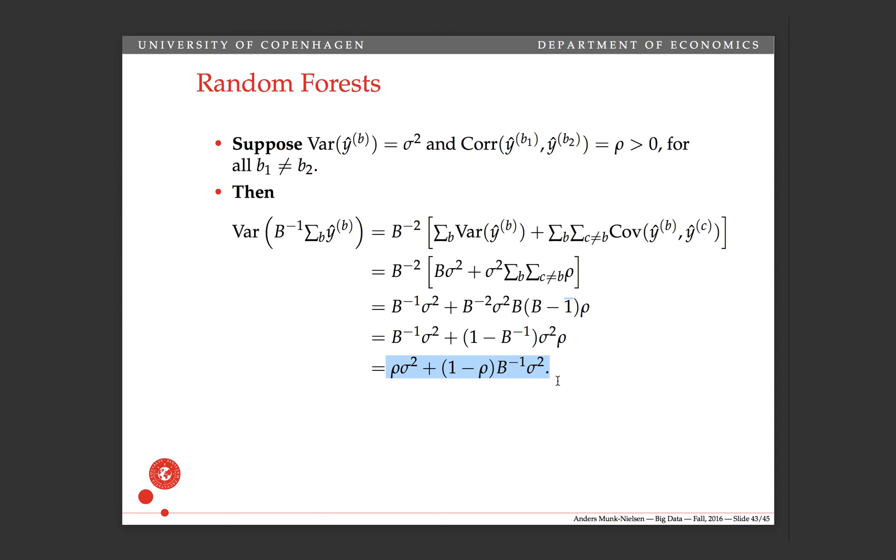So what can we see from this expression that we have derived? Firstly, we can see that the variance of the mean over bootstrap samples, that this thing here dies. So this term dies out as cap B tends to infinity. So the total variance tends to this number. And since rho is positive, we get a positive variance out. And so we can see that there's a lower bound on how low the variance can get. It's not the same as with bagging in general, that the variance can go to zero as we increase the number of terms. If there is a positive correlation, the variance will not die out.